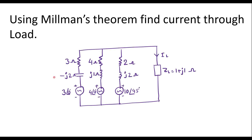In this video, I will consider one numerical on Millman's theorem. Using Millman's theorem, find current through load. The load is ZL, and we are supposed to calculate IL, that is nothing but the current through load, which is 1 plus J1. We are supposed to solve it using Millman's theorem.